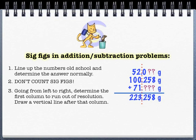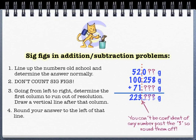What we need to do is, when you figure out where the resolution of measurements runs out, the first one to run out, in this case 71, you draw a line and then you pretty much give up on everything past it. You round it.